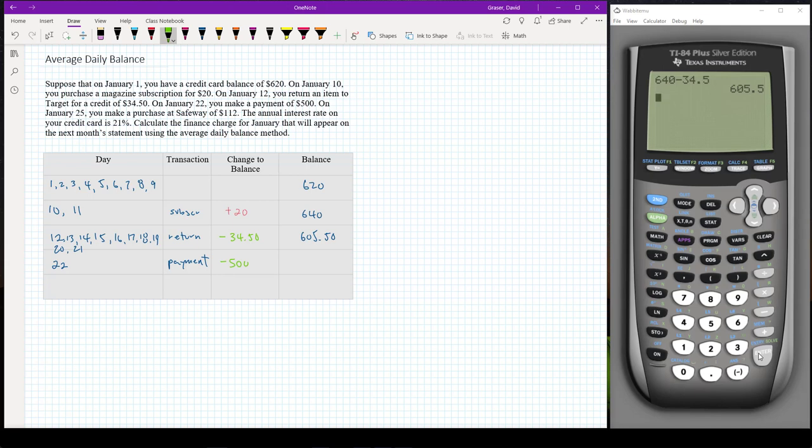A payment is going to reduce my balance by $500. So from the $605.50 balance, it's going to reduce it by 500, that's going to leave me with a balance of 105.50. The next transaction is on January 25th, so I'm going to have that balance on the 22nd, the 23rd, the 24th, and not the 25th because that's where the next one is.